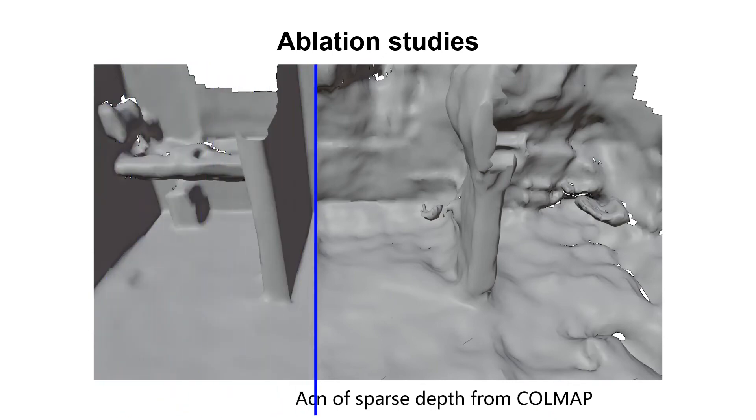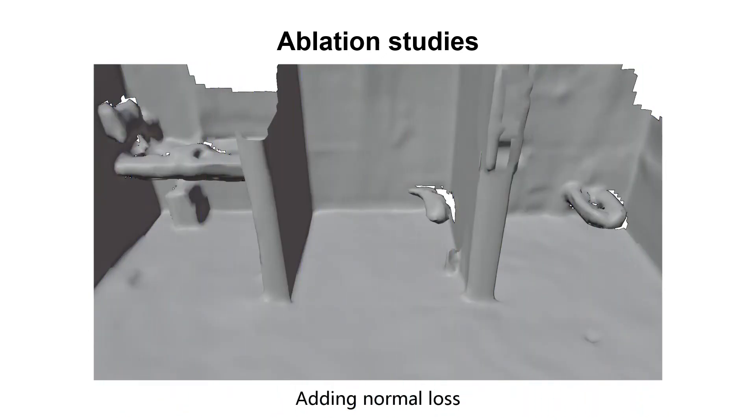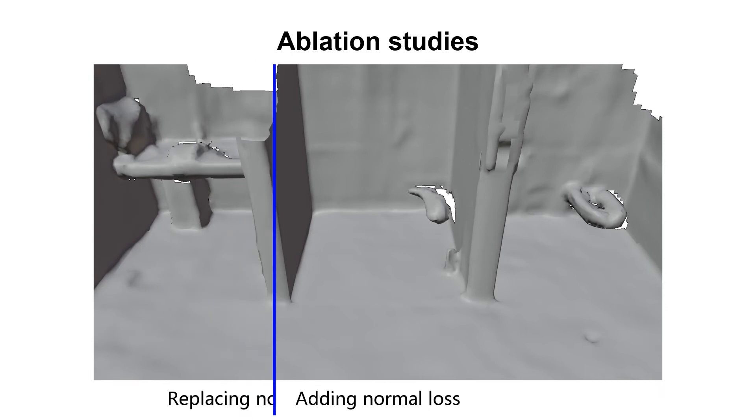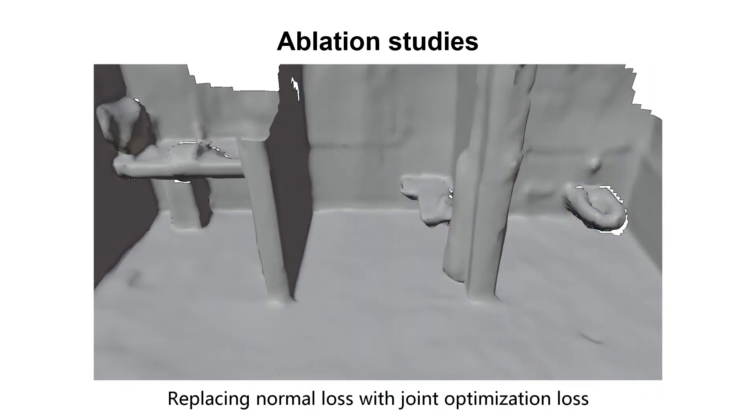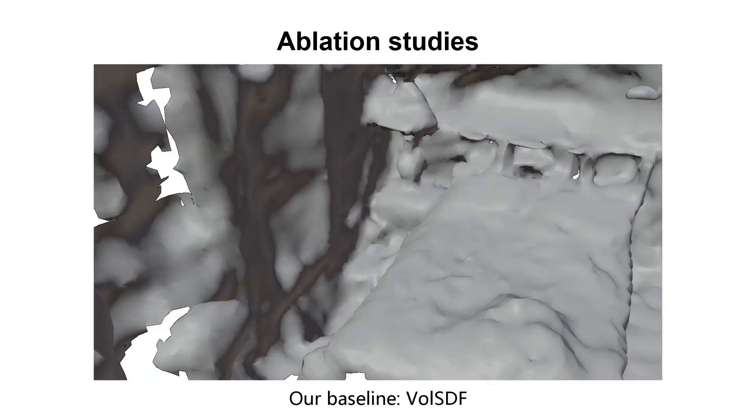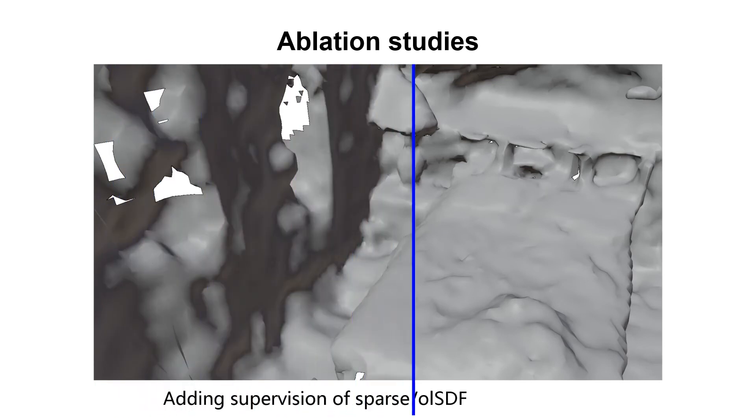By adding normal loss, reconstruction in planar regions can be improved, but some details in non-planar regions could be missed. By replacing normal loss with joint optimization loss, our method can achieve the most coherent reconstruction results.